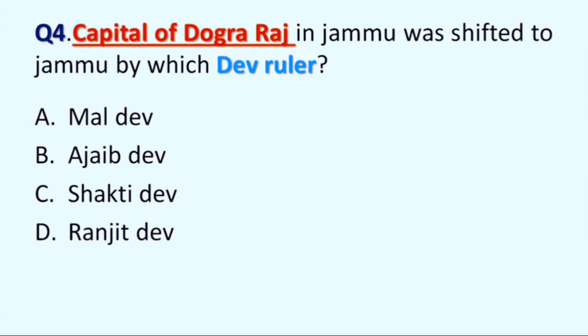Next question is: the capital of Dogra Raj in Jammu was shifted to Jammu by which Dev ruler? Option A: Maldiv, B: Ajab Dev, C: Shakti Dev, D: Ranjit Dev. Correct answer is Option A, Maldiv. Maldiv shifted the capital to Jammu. Maldiv ruled from 1361 to 1400 AD.